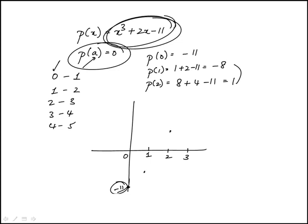We know that it's going to intersect the x-axis between 1 and 2, so we do have a real 0 between 1 and 2. The answer is b.